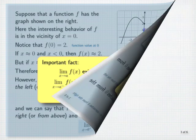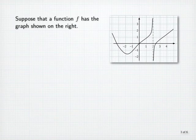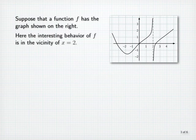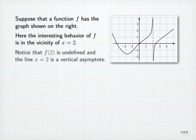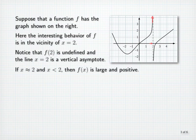Another example. Again, suppose that f is the function whose graph is shown on the right. Here, the interesting behavior of f is in the vicinity of x equal to 2. Notice that f of 2 is undefined and the line x equals 2 is a vertical asymptote. If x is close to 2 while less than 2, then f of x is large and positive. In fact, the closer x is to 2 while less than 2, the larger f of x is.